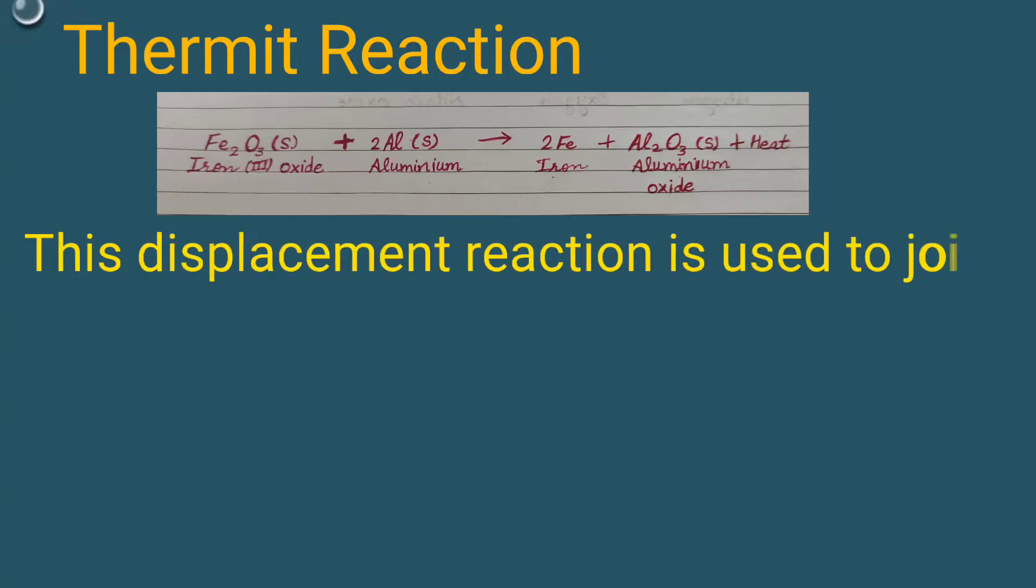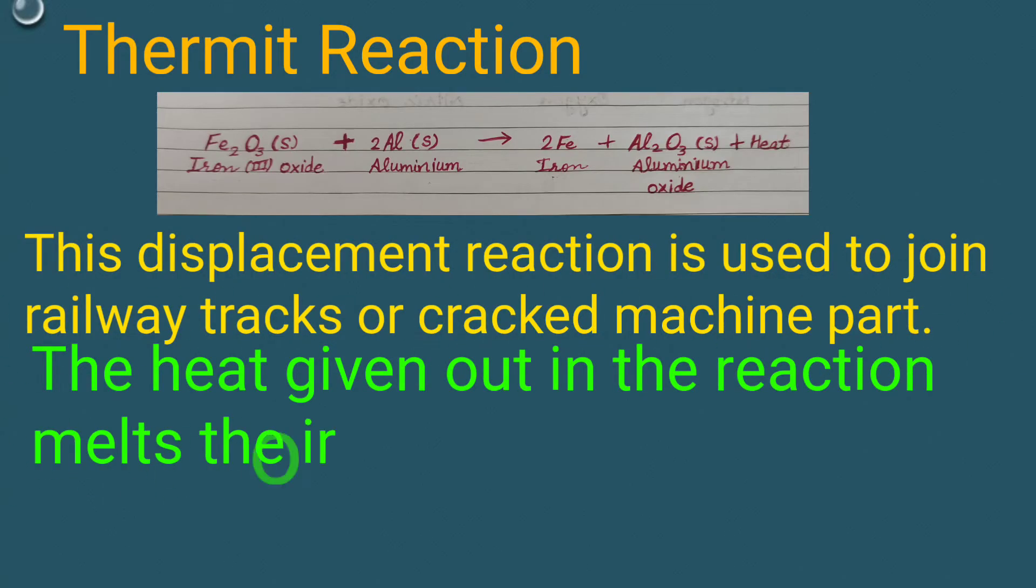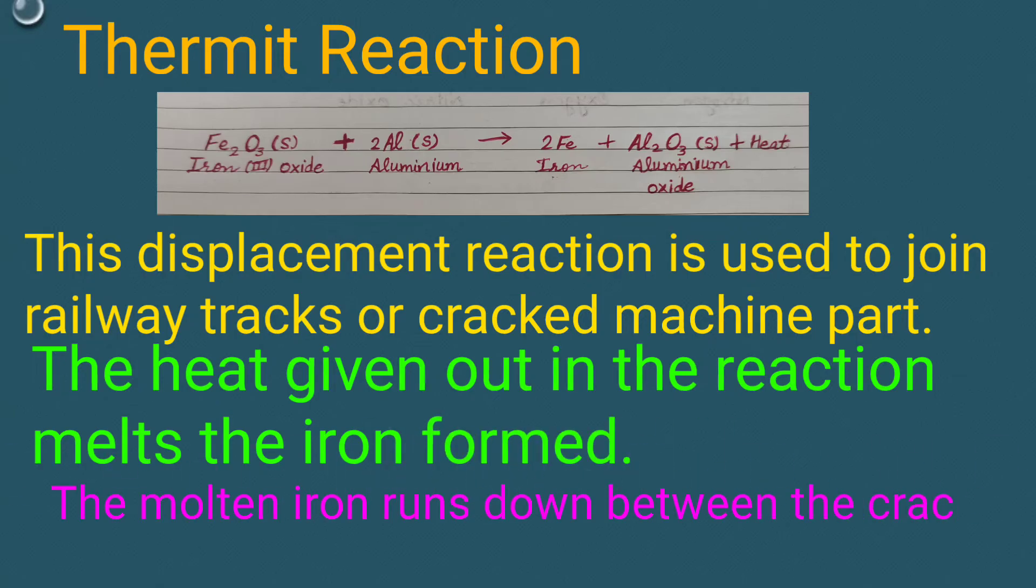This displacement reaction is used to join railway tracks or cracked machine parts. The heat given out in the reaction melts the iron formed. The molten iron runs down between the cracks and welds them together.